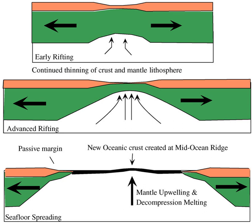In fact, passive margins are extremely long and vary along their length in rift geometry, nature of transitional crust, and sediment supply. It is more appropriate to subdivide individual passive margins into segments on this basis and apply the three-fold classification to each segment.